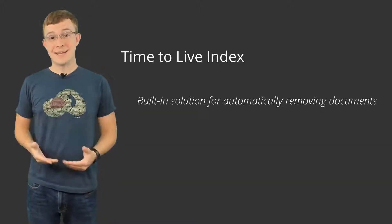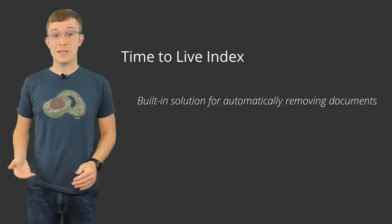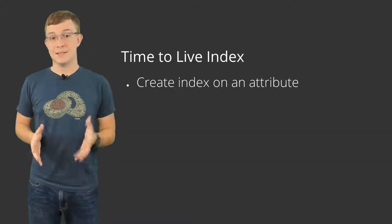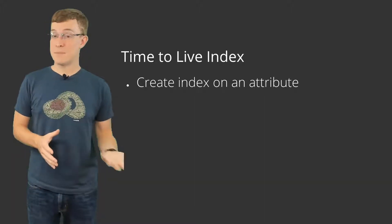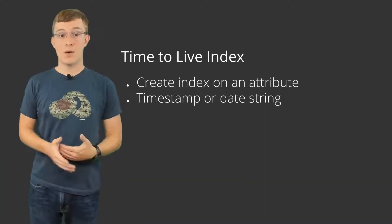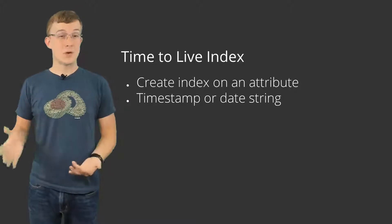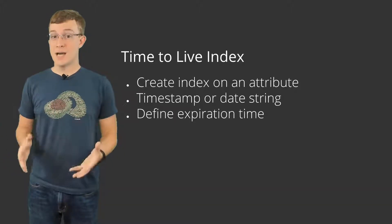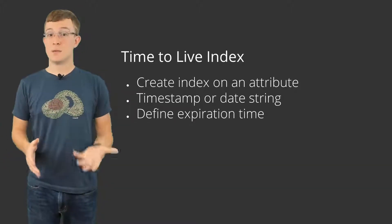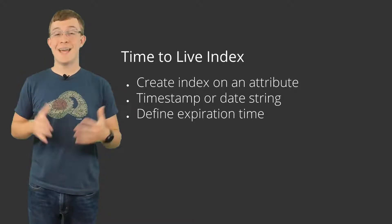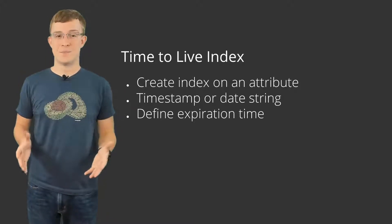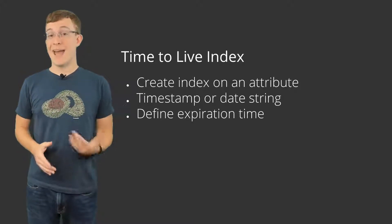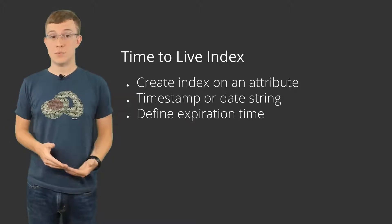With Time to Live Indexes in ArangoDB, you create an index on an attribute that is either a timestamp or a date string, and then also define the amount of time before the associated document should be considered expired. Once a document is marked as expired, it will eventually be removed.